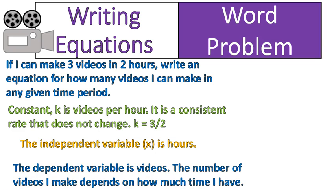Let me say that in a different way. The dependent variable is the videos. The number of videos I make depends on how much time I have. You can put the word depends in there for that one. You can't, however, say that the number of hours depends on how many videos I make. That is one way to differentiate the dependent versus independent variable sometimes.